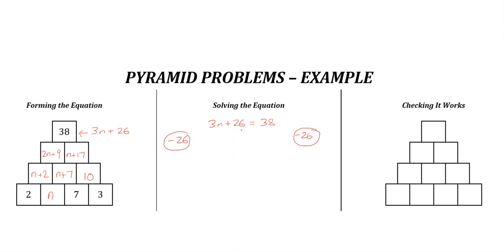equation. So if I take 26 away from 38, I'm going to get 38 minus 26 is 12. And if I take 26 away from this, well, 3n plus 26 minus 26 is just 3n. So these two sides are still equal because I've taken 26 away from both of them. Now we've got 'I think of a number multiplied